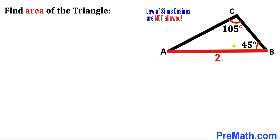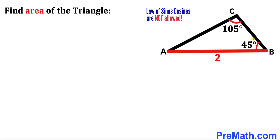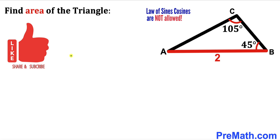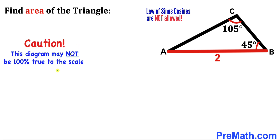Welcome to pre-math. In this video we have triangle ABC such that its base AB is 2 units, angle ABC is 45 degrees, and angle ACB is 105 degrees. Our task is to calculate the area of triangle ABC. Please keep in mind that this figure may not be 100% true to scale.